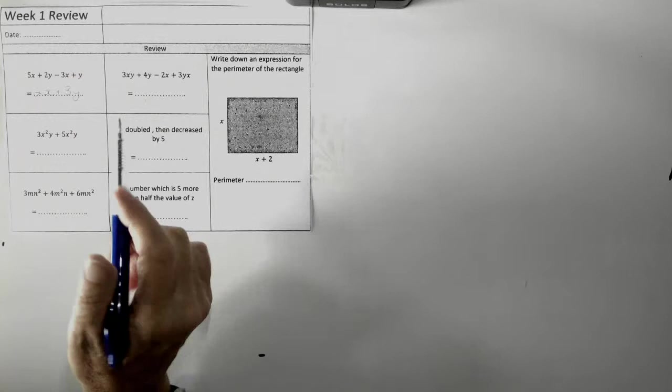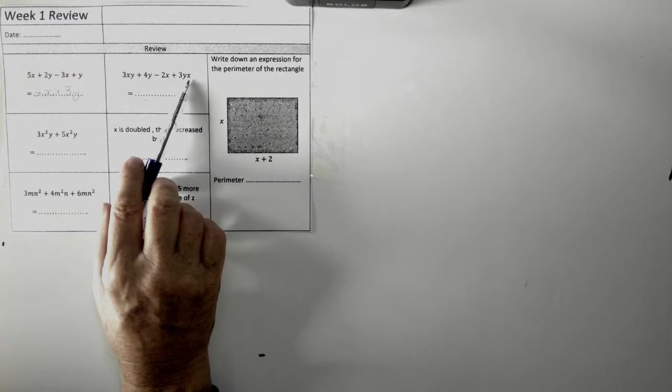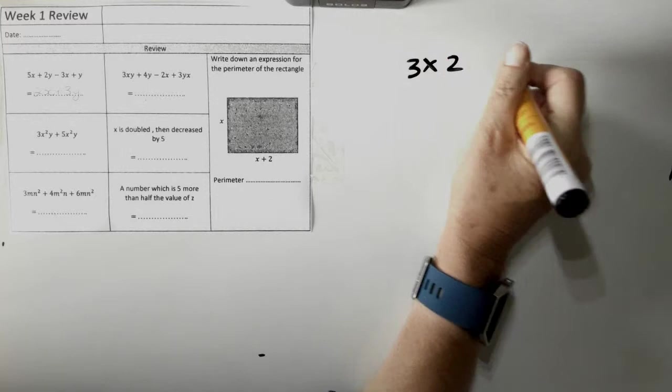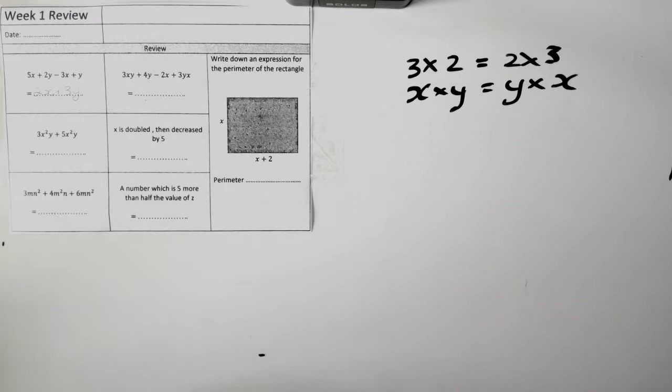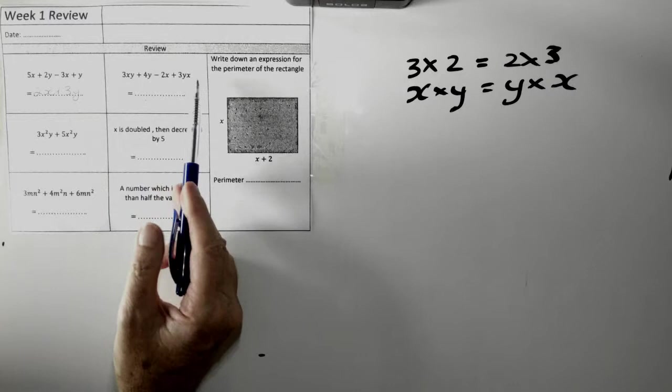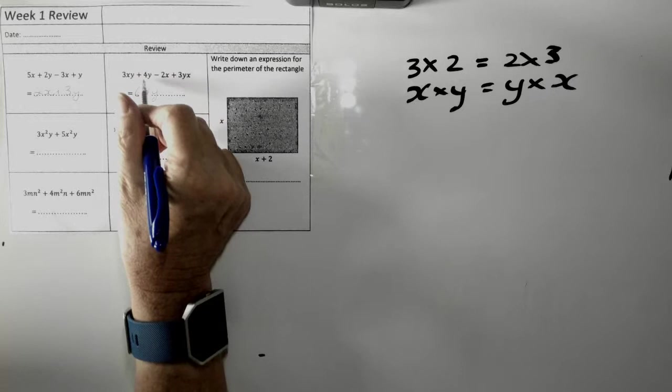XY's are actually the same as YX. In the same way that if you go three times two, it is the same as two times three. So, X times Y is the same as Y times X. So, what I can put together is I've got three XY's, and I've got another three XY's. Put them together, I get six XY.